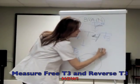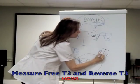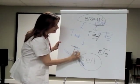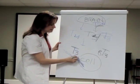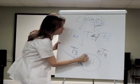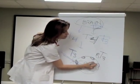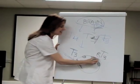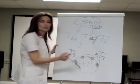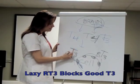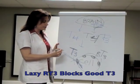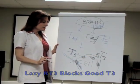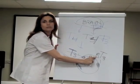Also ask for your reverse T3 — RT3 — to be measured. Reverse T3 looks enough like T3 that it sits on your cell receptors like a lazy husband on a couch. RT3 occupies the cell's doorways, so the real thyroid hormone cannot get through. If you have too much RT3, that's a major problem even when free T3 looks okay.